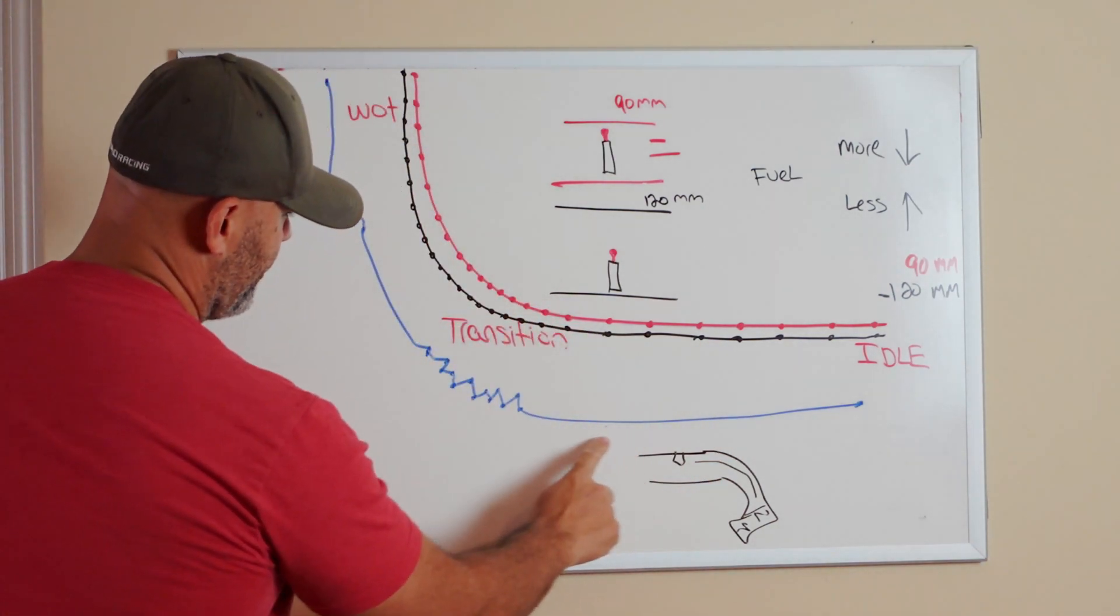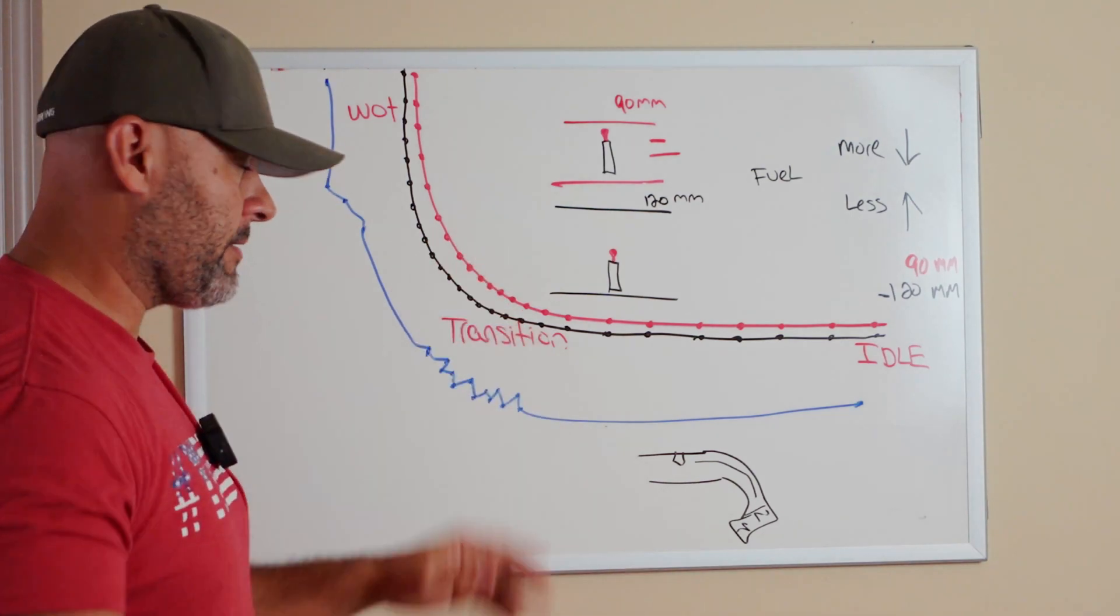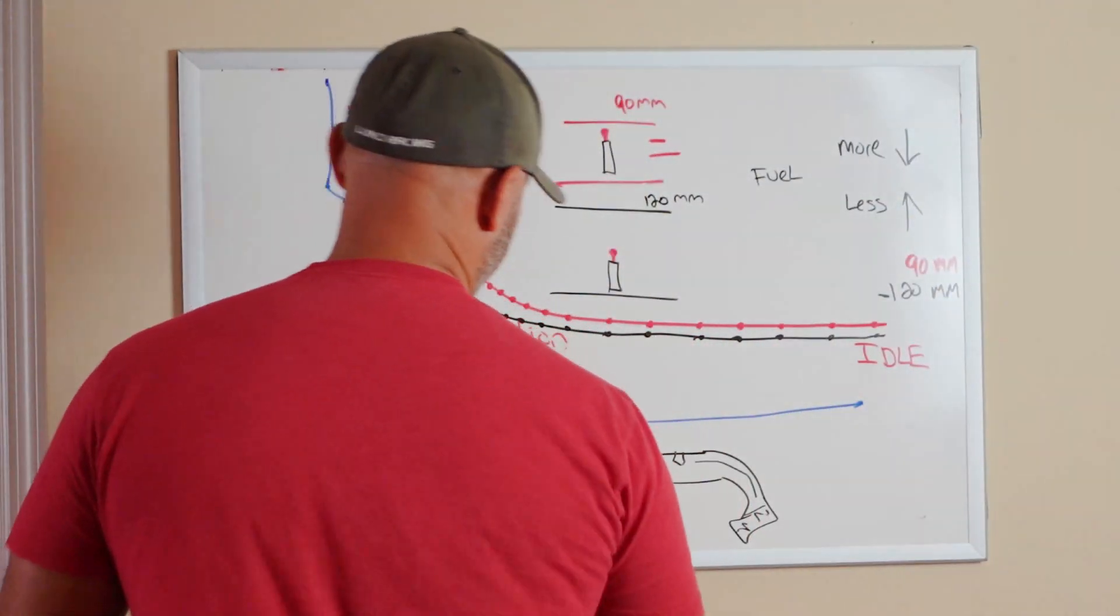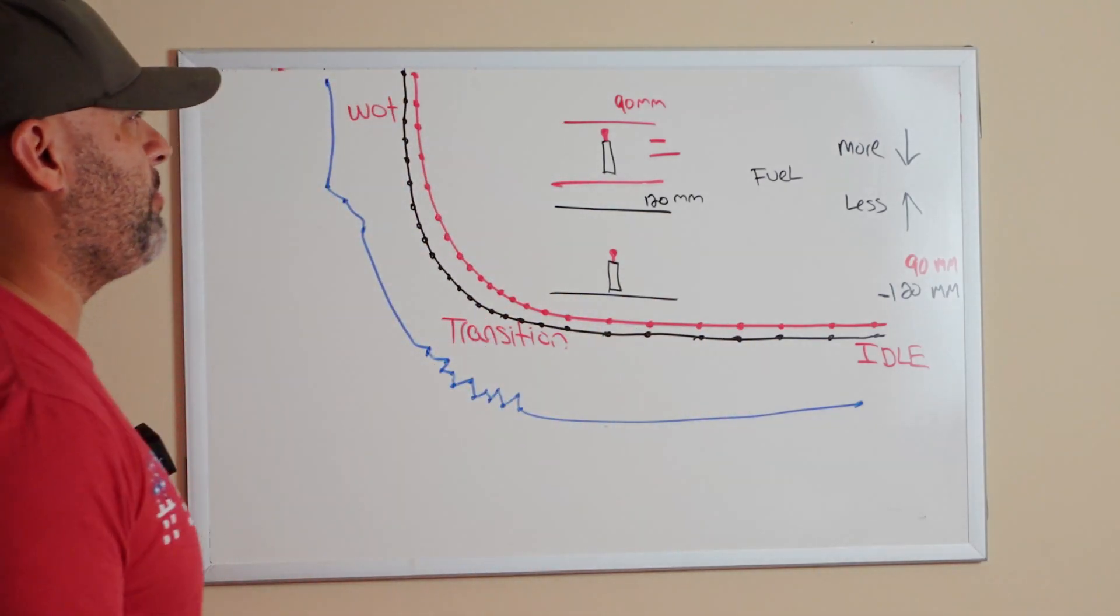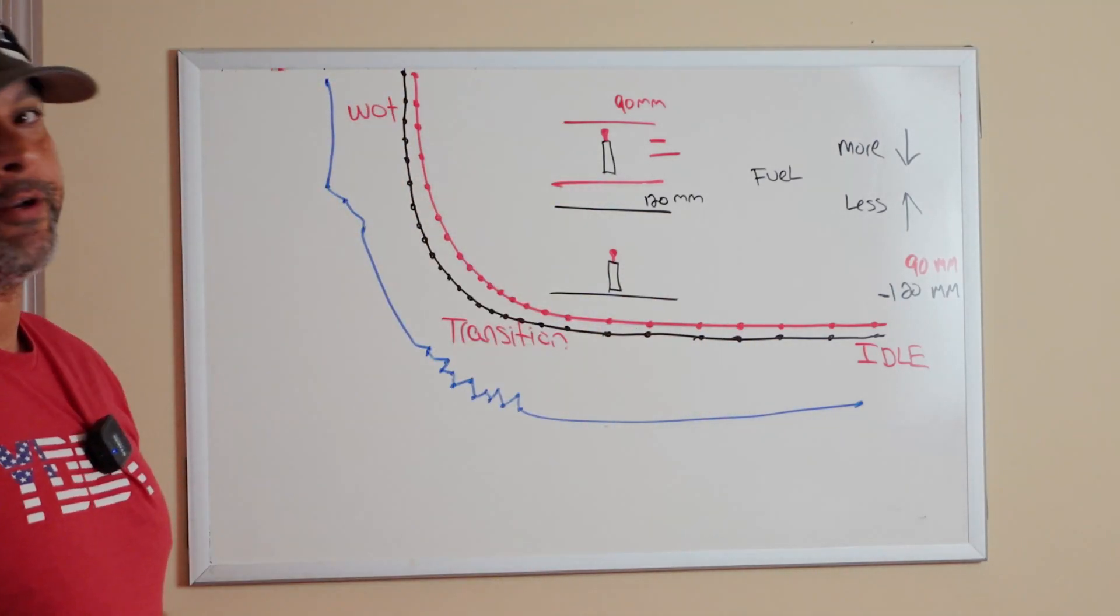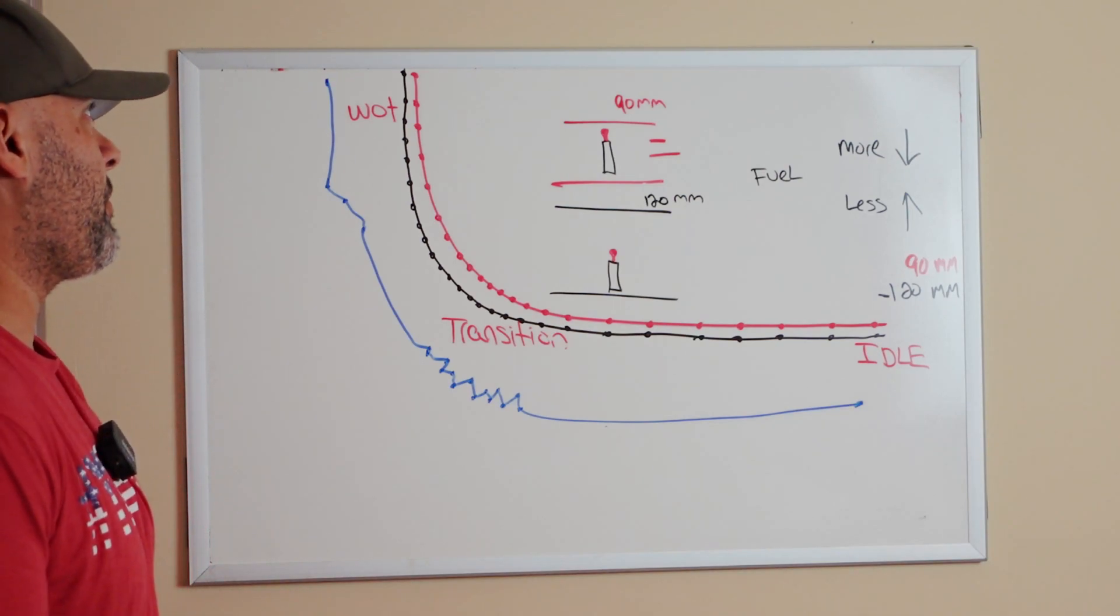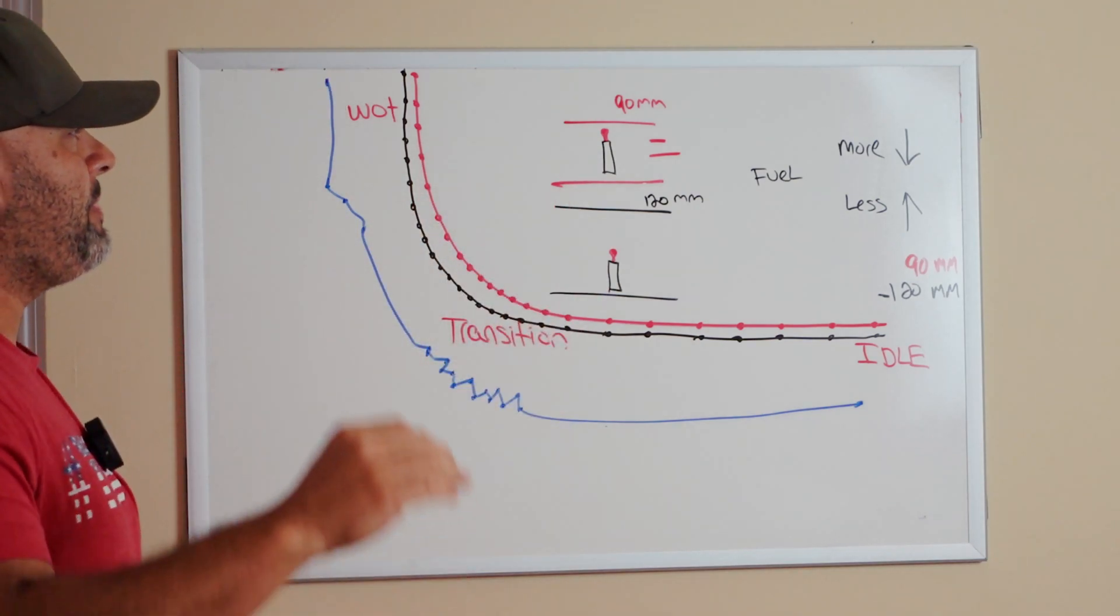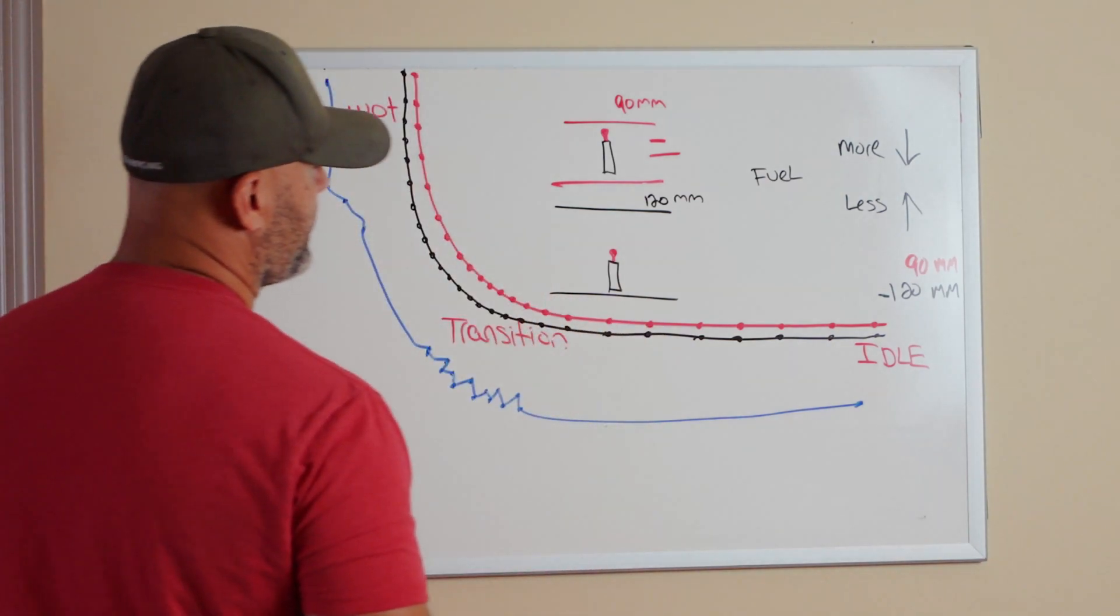Let's say the red graph is a bone stock 90 millimeter housing from a Gen 3 Mustang. This bone stock MAF curve has been calibrated. So what is a MAF curve?